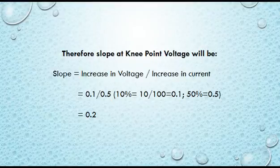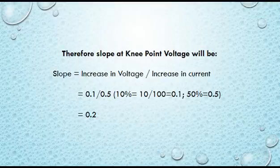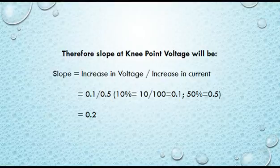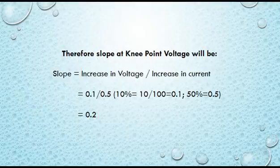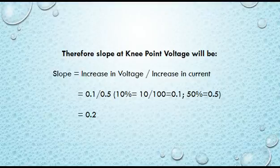Therefore, the slope at the knee point voltage can be calculated as: slope equals increase in voltage divided by increase in current, that is 0.1 divided by 0.5 — where 10% means 0.1 and 50% means 0.5. By division, the result is 0.2.